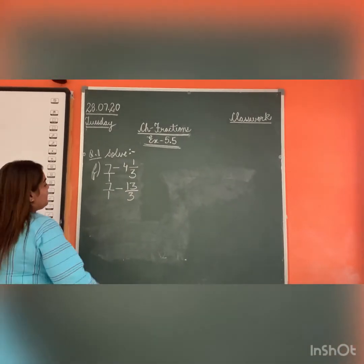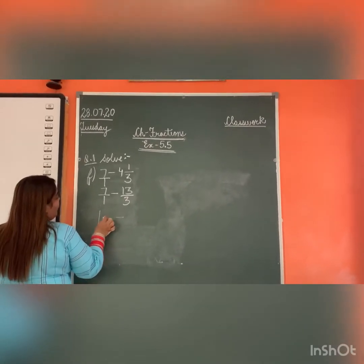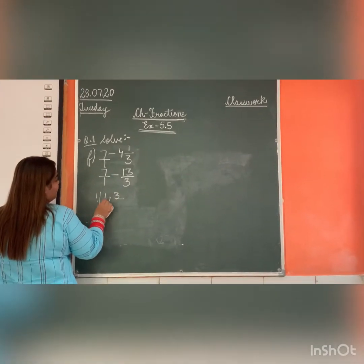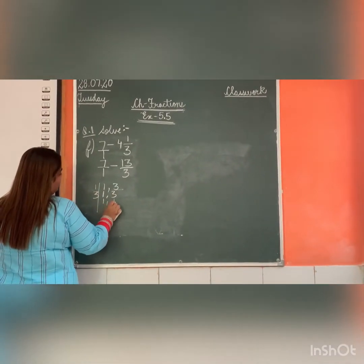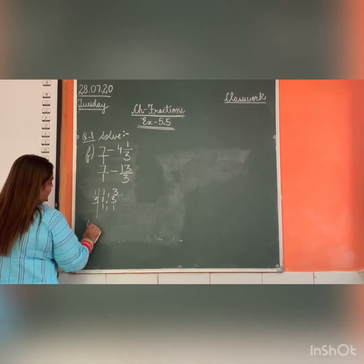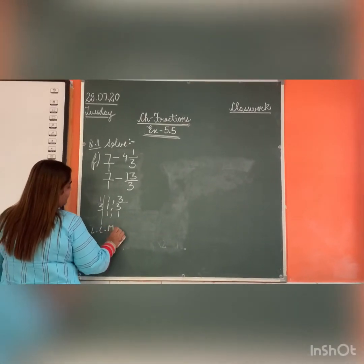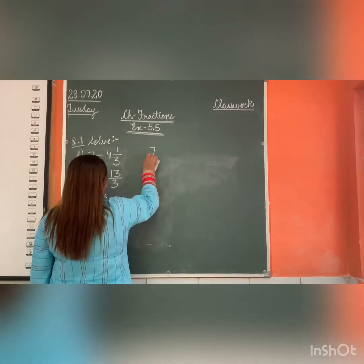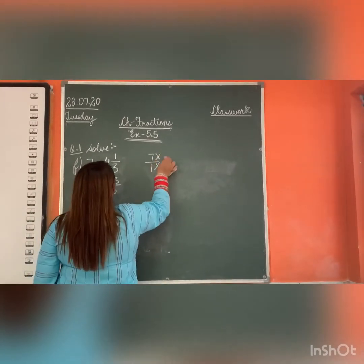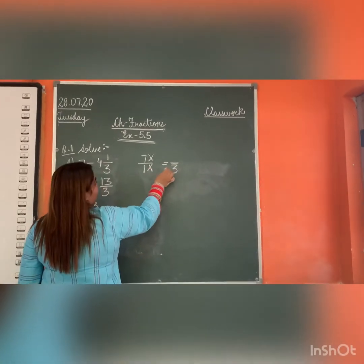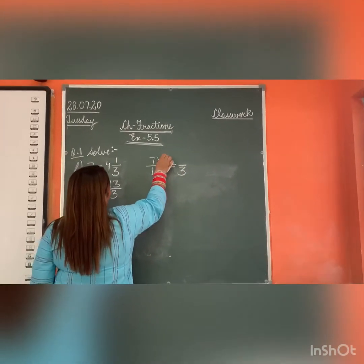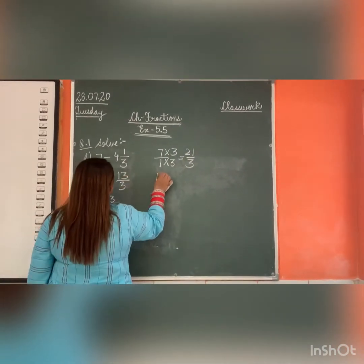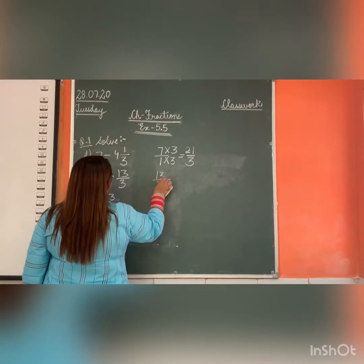Aagya? Aag similar dish pa LCM lenge. 1 and 3. 1, 3, 3 ones. So LCM is 3. Hamara LCM kya aya? 3. Aag 7 by 1, 1 point kish day. Speaking para 3. So 7 threes, 21 by 3. Aag 13 by 3.